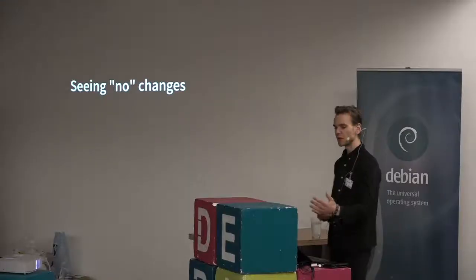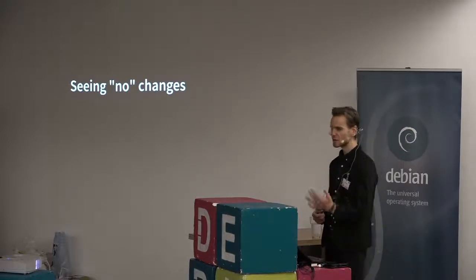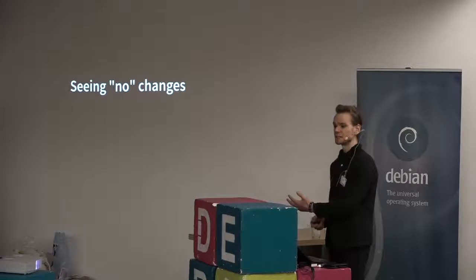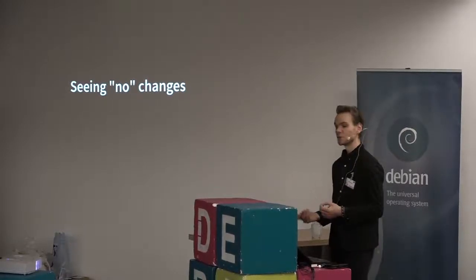The other use case is seeing no changes at all. If your build is reproducible, you could build once, change your compiler or some other part of your toolchain, build it again, and if you get the exact same results — great, that's what you intended. You want to see no changes when you change some part of your toolchain. If there were changes, Diffoscope would highlight them and show you exactly why — it might be compiler optimizations or something else.